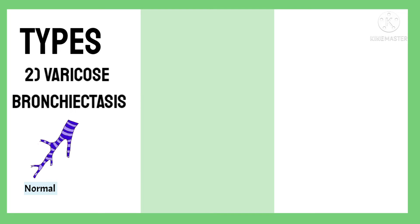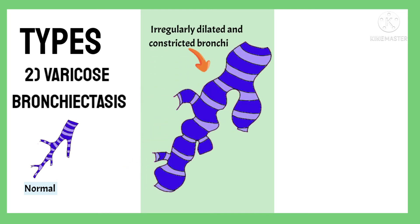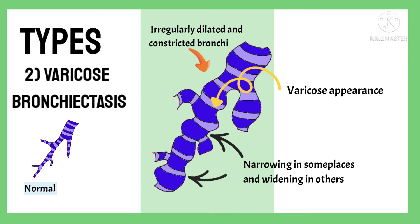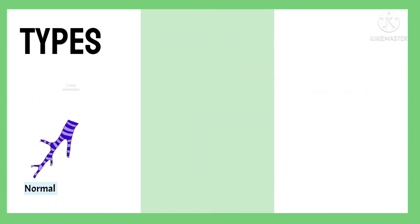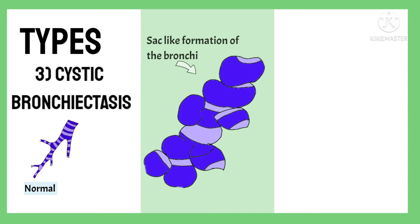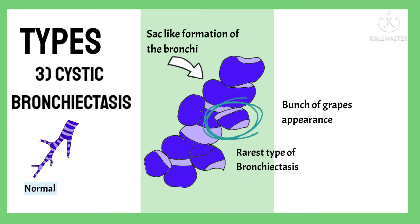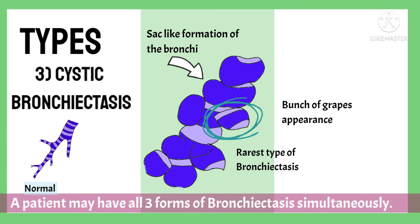In varicose bronchiectasis, the bronchi are irregularly dilated and constricted, giving a varicose or twisted appearance — like a twisted road with narrowing in some places and widening in others. In the cystic type of bronchiectasis, there is sac-like formation of the bronchi due to dilation, with an appearance like a bunch of grapes. This is the rarest type. A patient may have all three forms simultaneously.